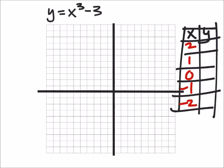So, if x is 2, then I've got 2 cubed, which is 8 minus 3, which would make this y 5. So I've got a point at 2, 5. 1, 2, 3, 4, 5.